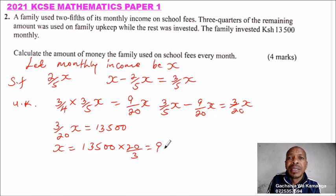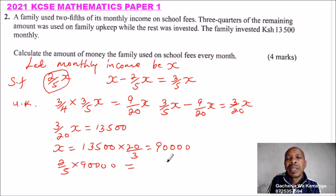You are told to calculate the amount the family used on school fees every month. So school fees, this was what was used for school fees. You get 2/5 of x, which we have found is 90,000, and using your calculator then you should be able to simplify this and you get 36,000. So that was what was used for paying the school fees.